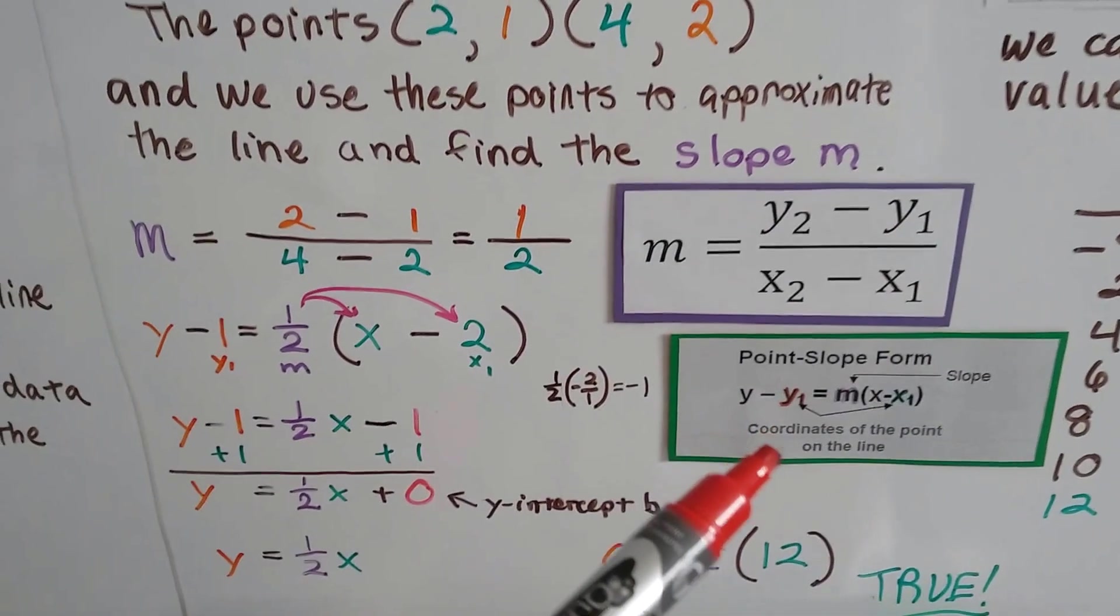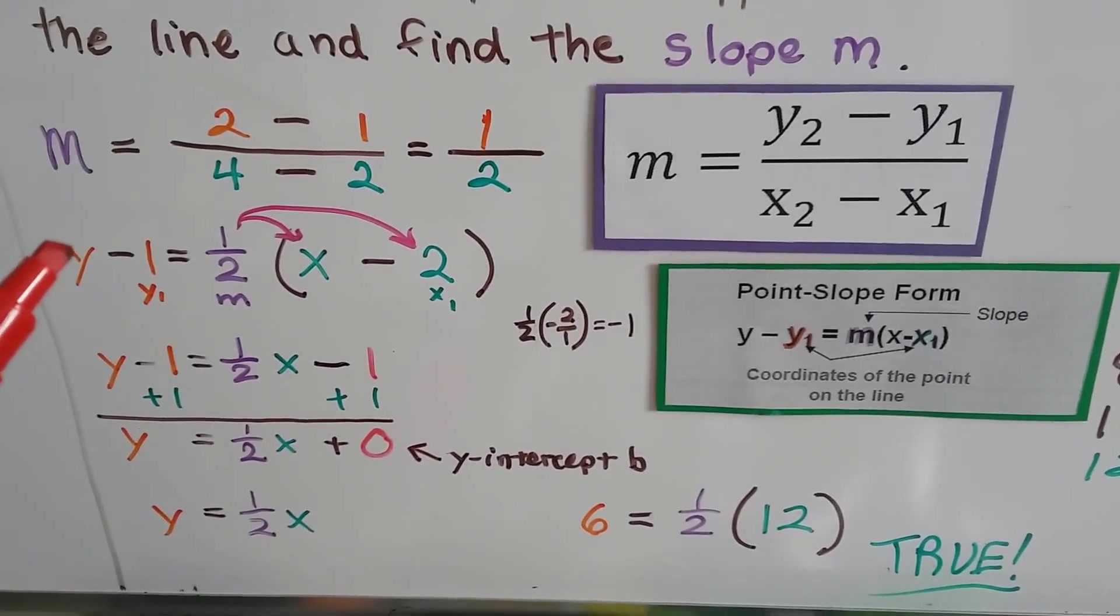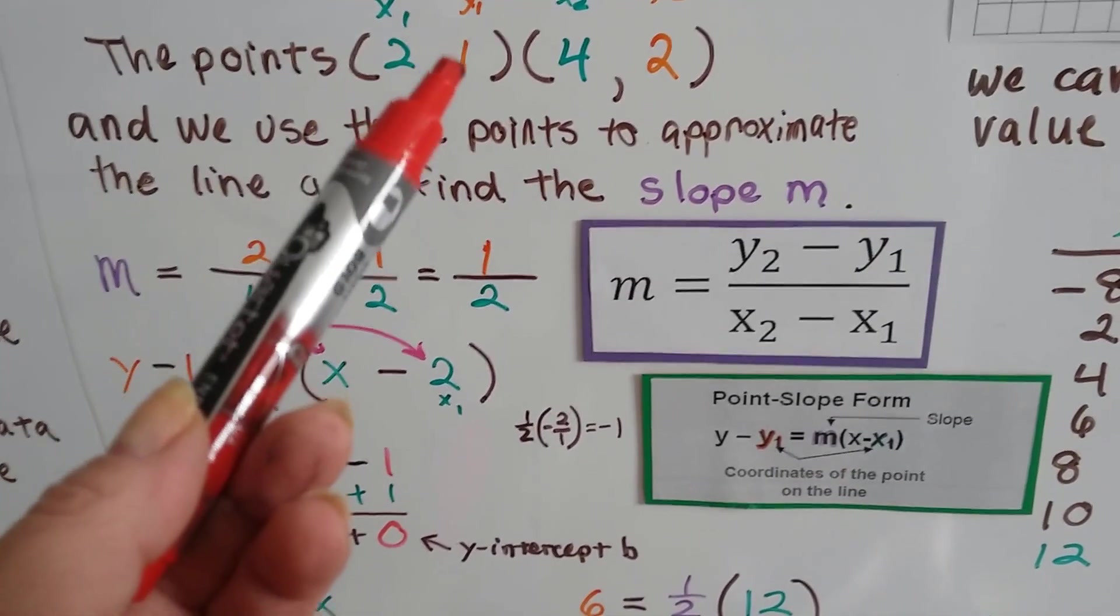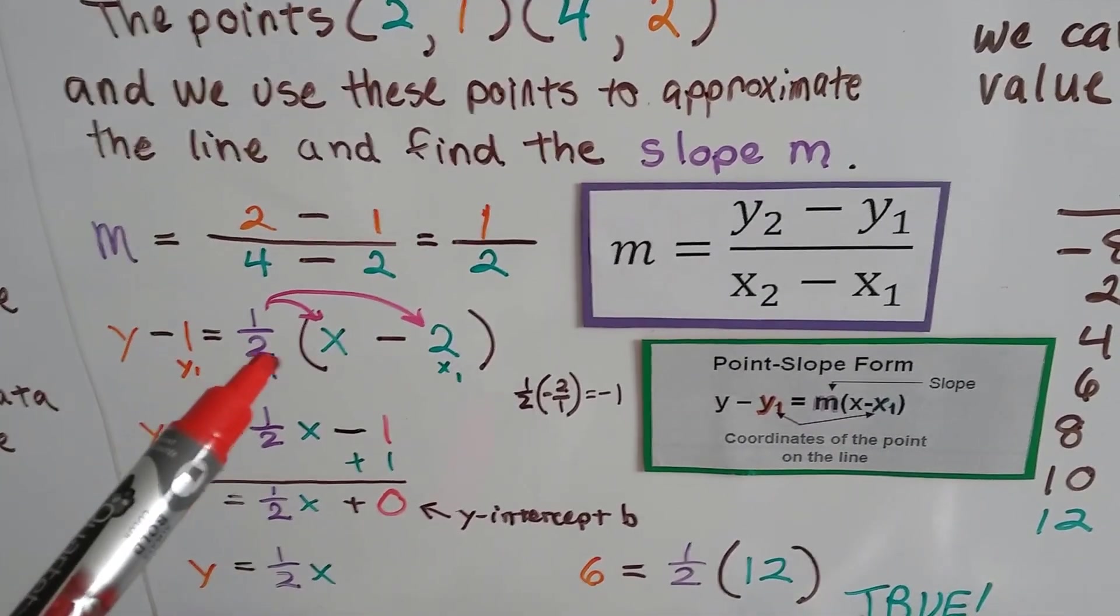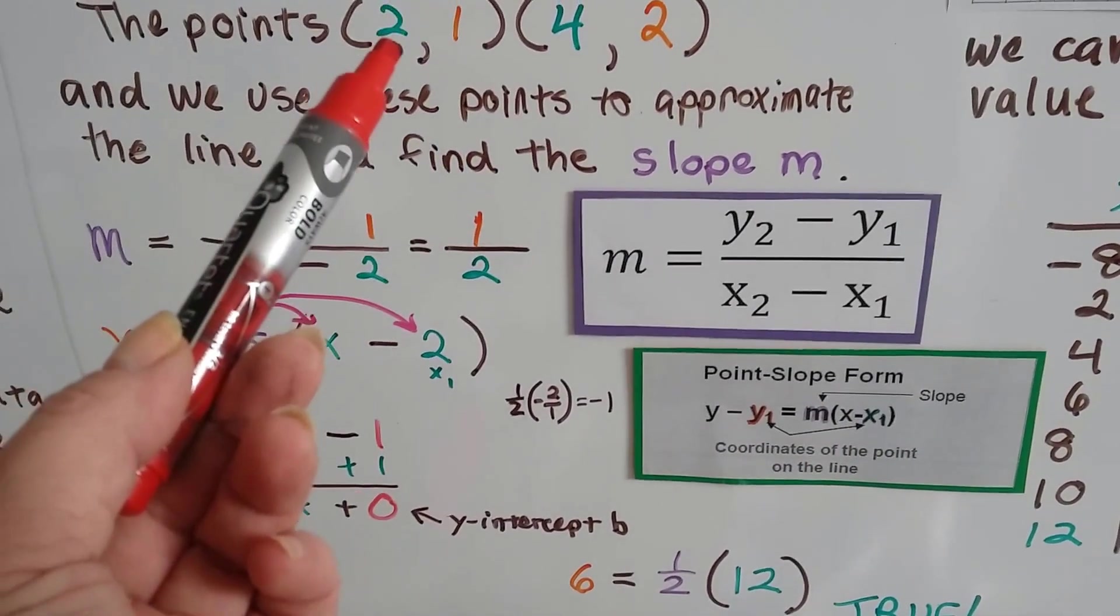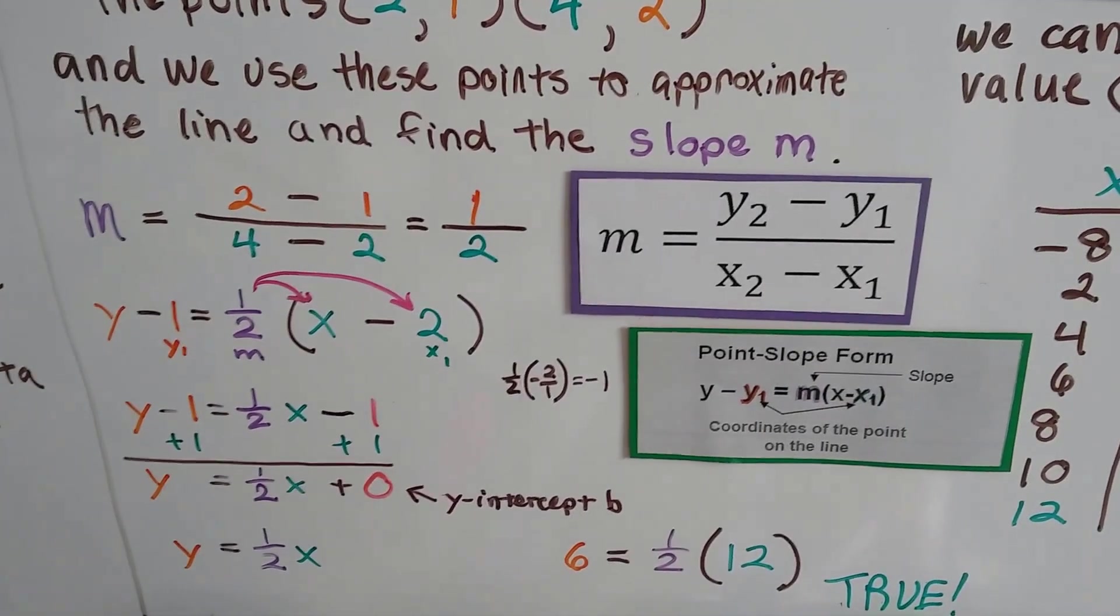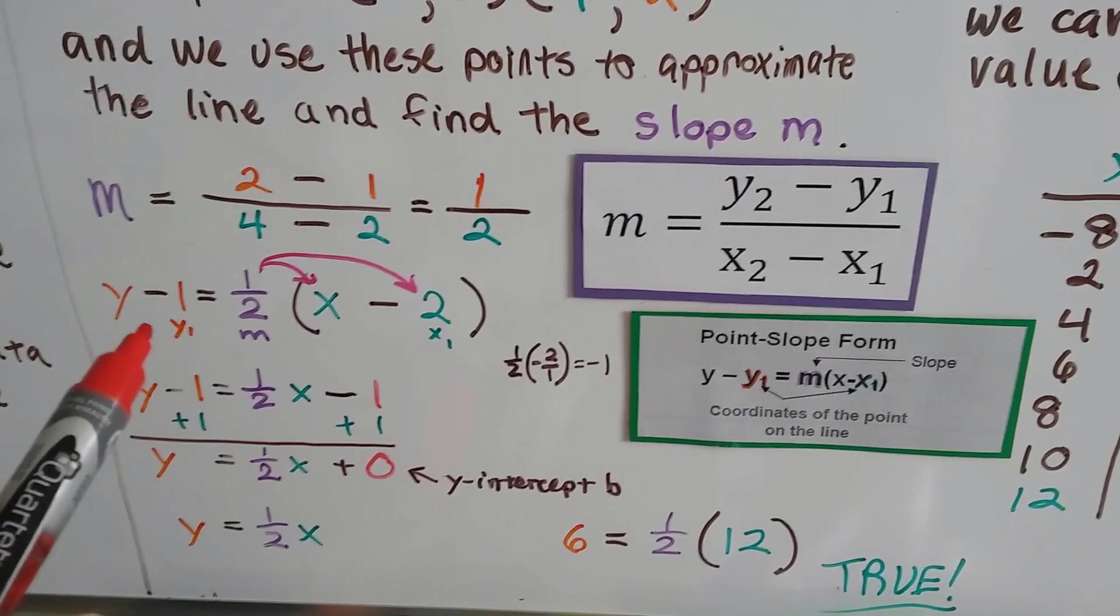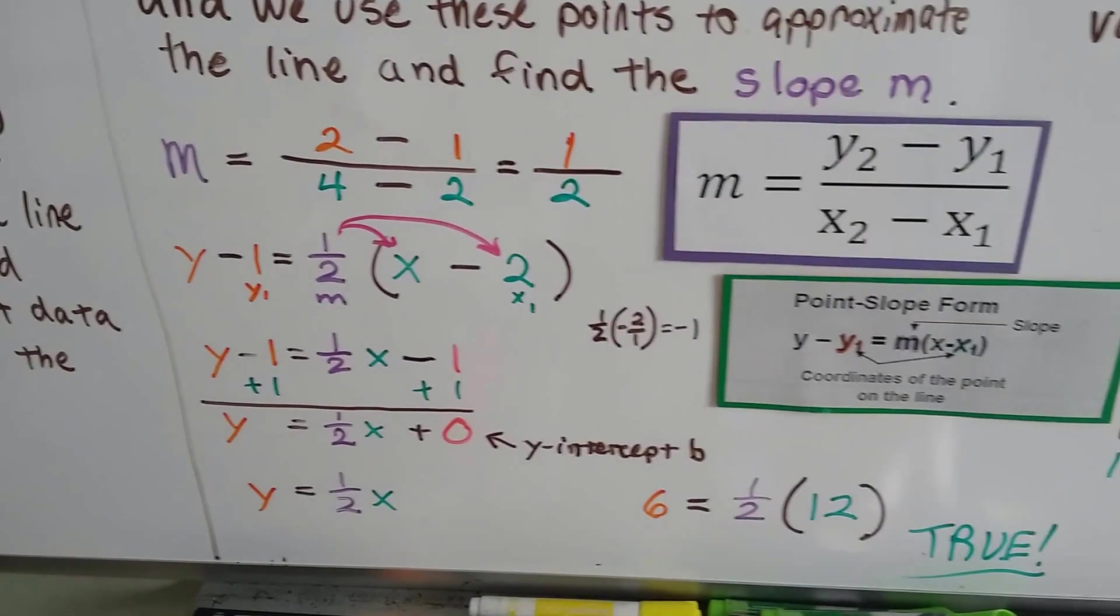And then we put it into point-slope form like this. And we use a random x, y, so here's our random y, minus y1, so minus the 1. And we take our slope that we found, this half, and we multiply it by a random x minus our x1, which is a 2. Now we covered this in the previous video, so if you haven't seen it, there'll be a link to that in the description.